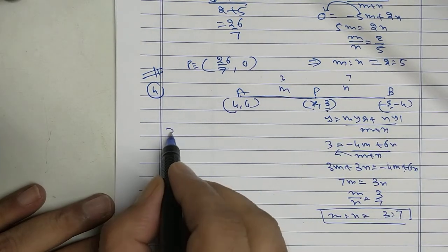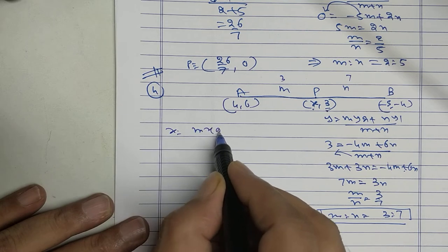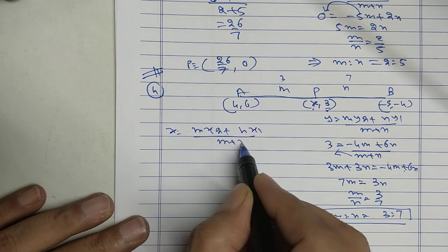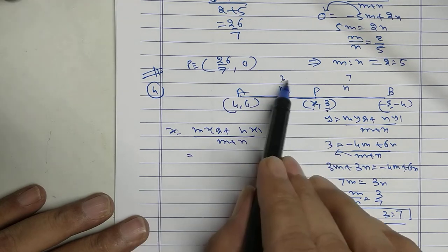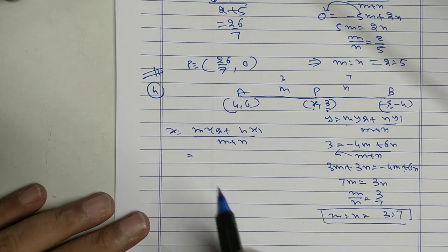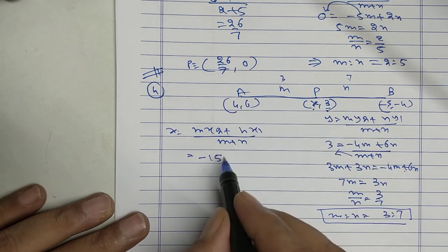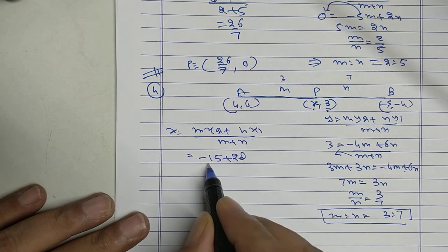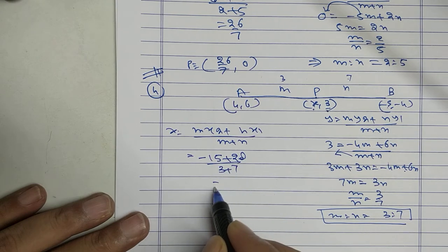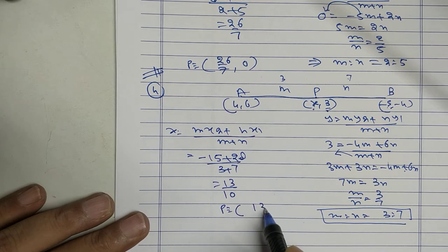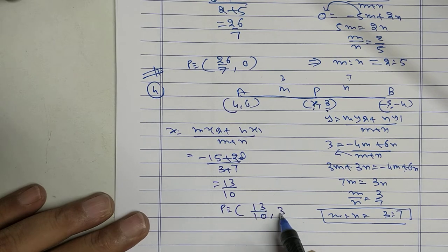Now find x. M x2 plus n x1 upon m plus n. 3 into minus 5, minus 15. 7 and 4, plus 28. 3 plus 7. 13 upon 10. And my answer is 13 upon 10 and comma 3.